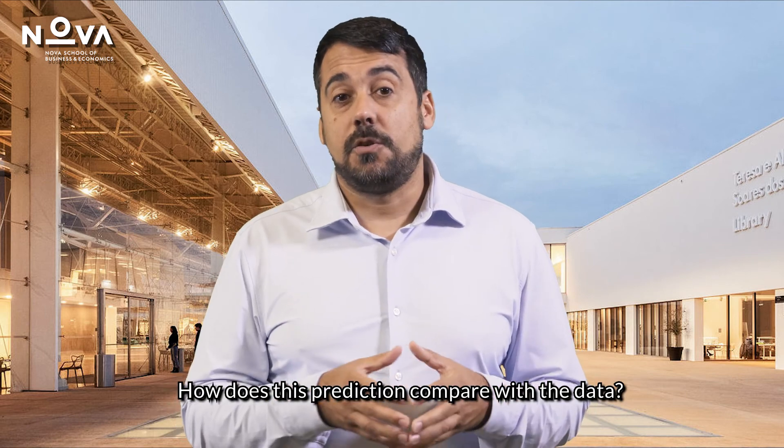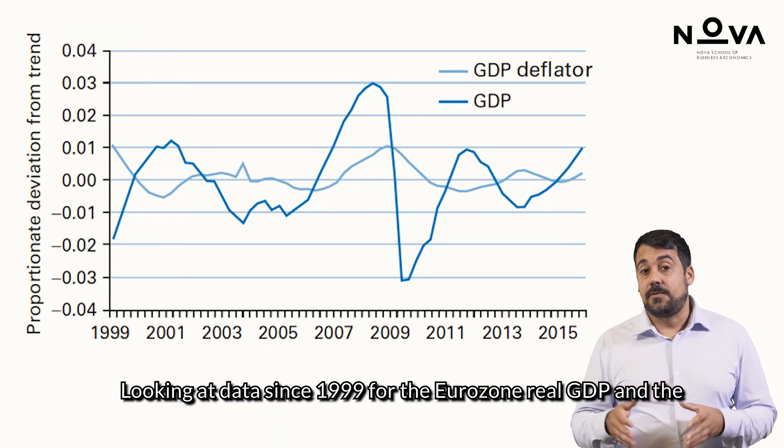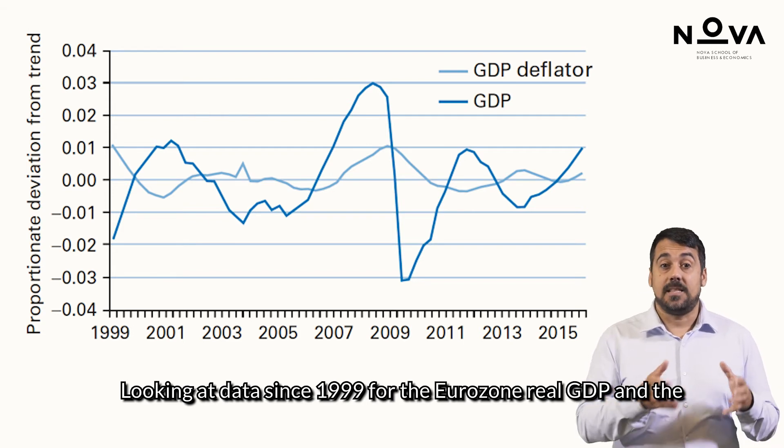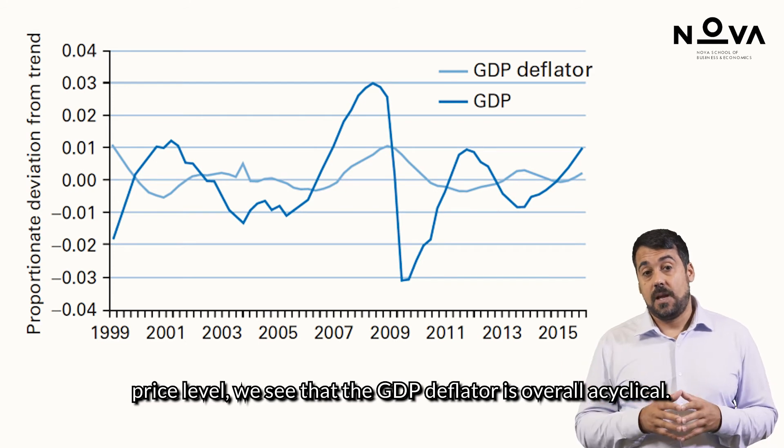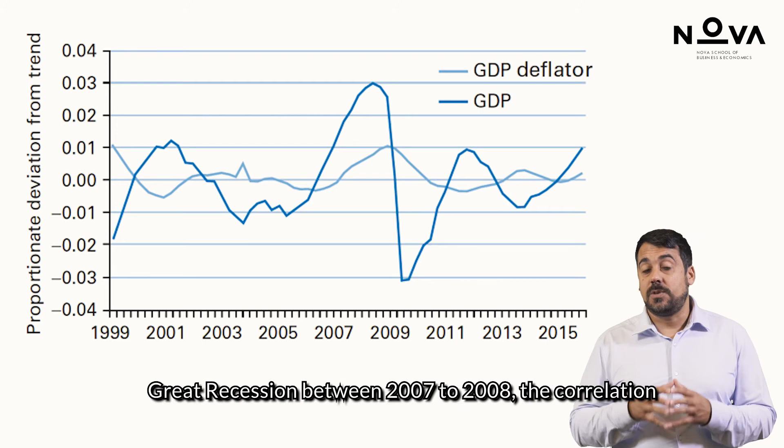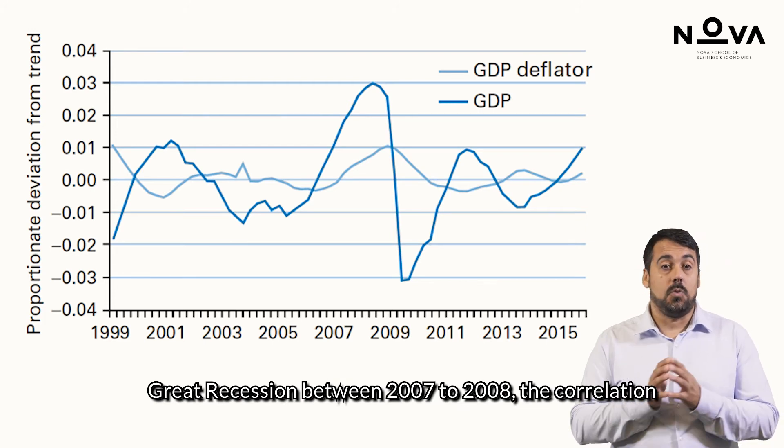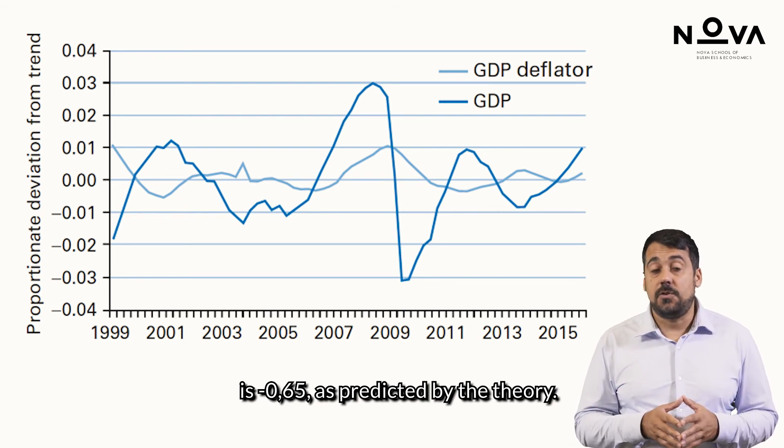How does this prediction compare with the data? Looking at data since 1999 for the Eurozone real GDP and the price level, we see that the GDP deflator is overall acyclical. However, if we do not take into account the period of the Great Recession between 2007 and 2008, the correlation is minus 0.65, as predicted by the theory.